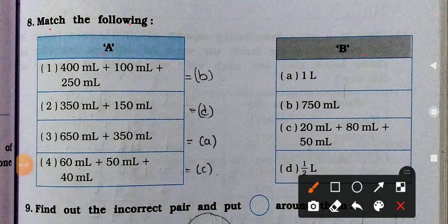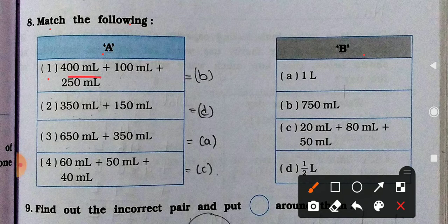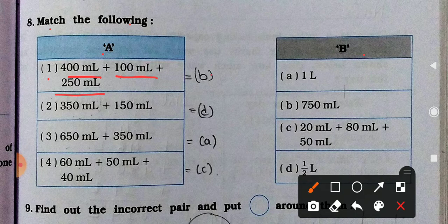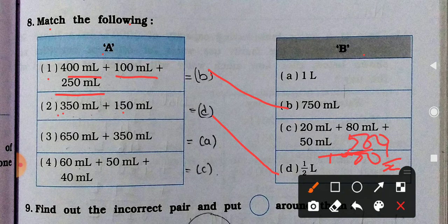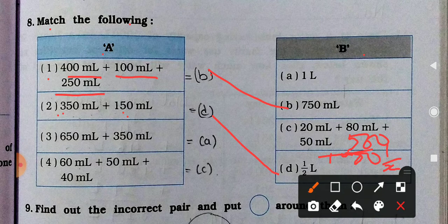Now see the 8th number. Match the following. Column A and column B is given here. Number 1: 400 milliliter plus 100 milliliter plus 250. So add it, how much you will get? 750 milliliter. 350 and 150, how much? 500. 1 by 2 liter means how much? 500. 1 liter means 1000. So 1000 ka half is 500. So 500 milliliter, that is 1 by 2 liter. 1 liter means 1000 milliliter. When you divide 1000 by 2, it will come 500.